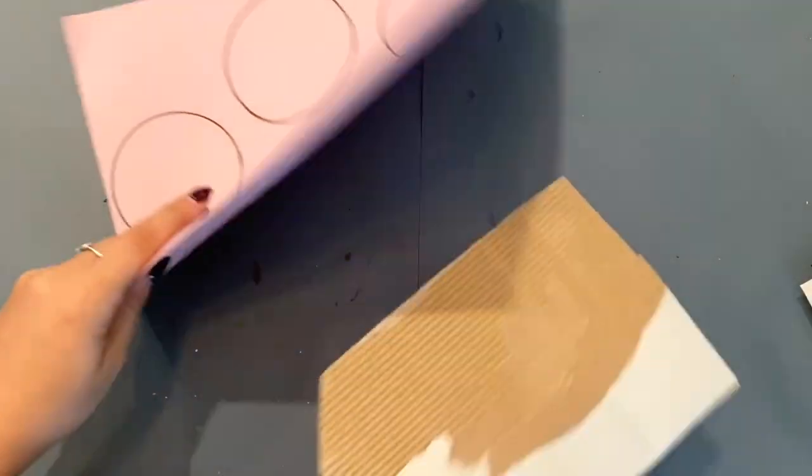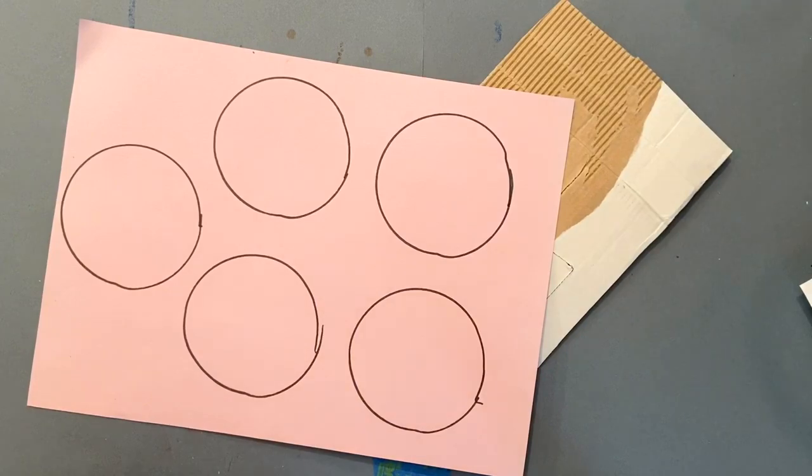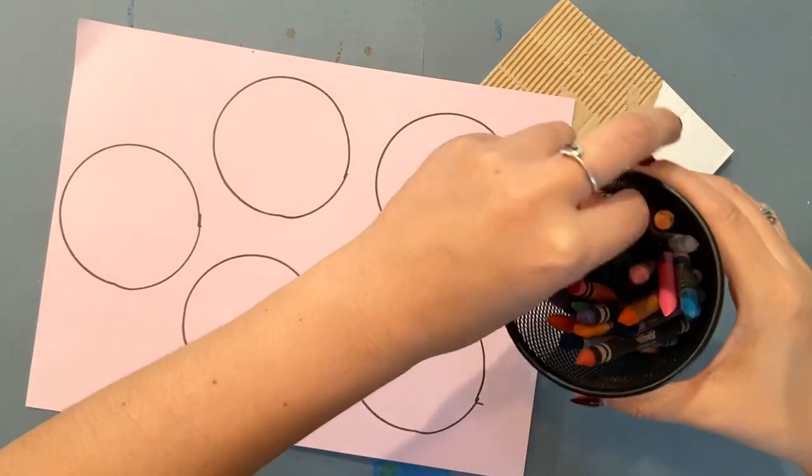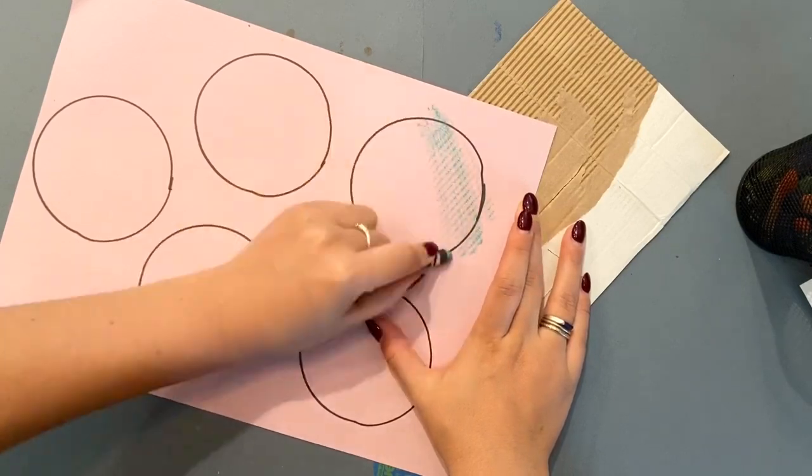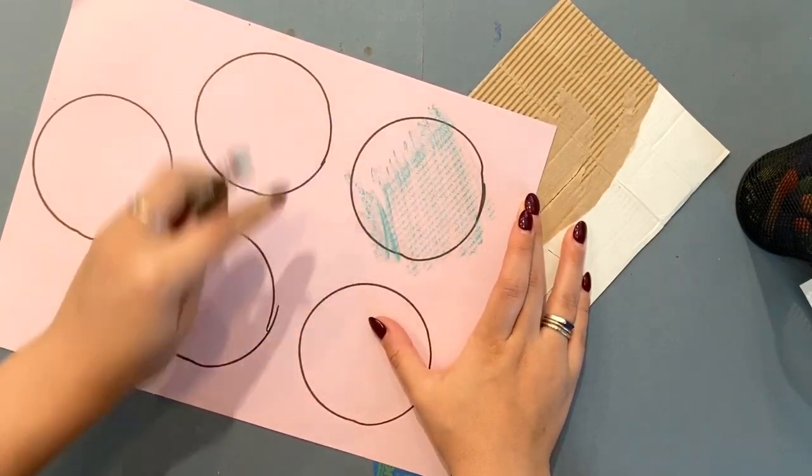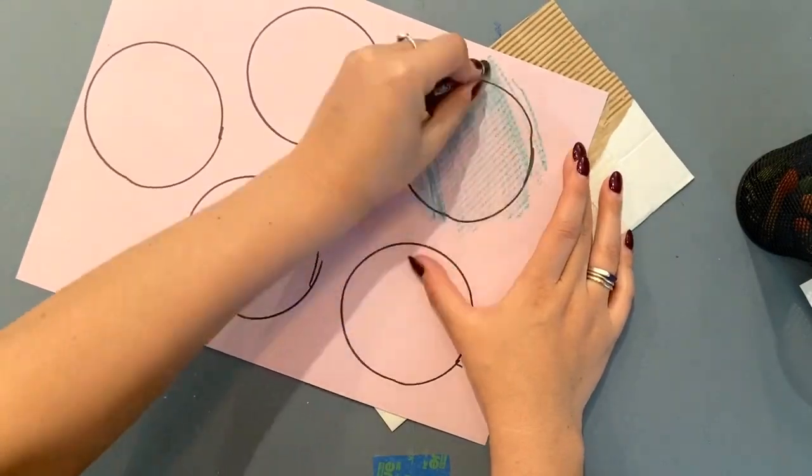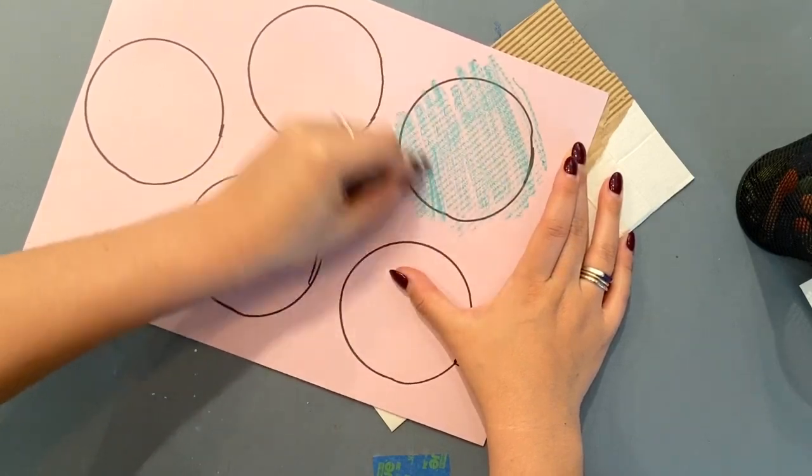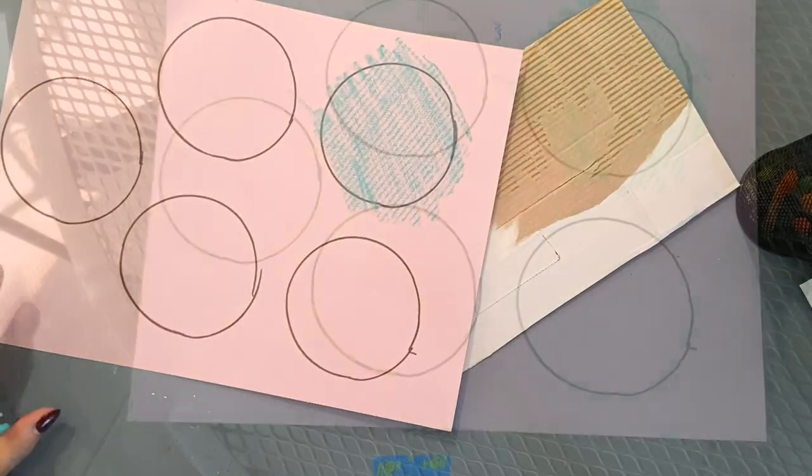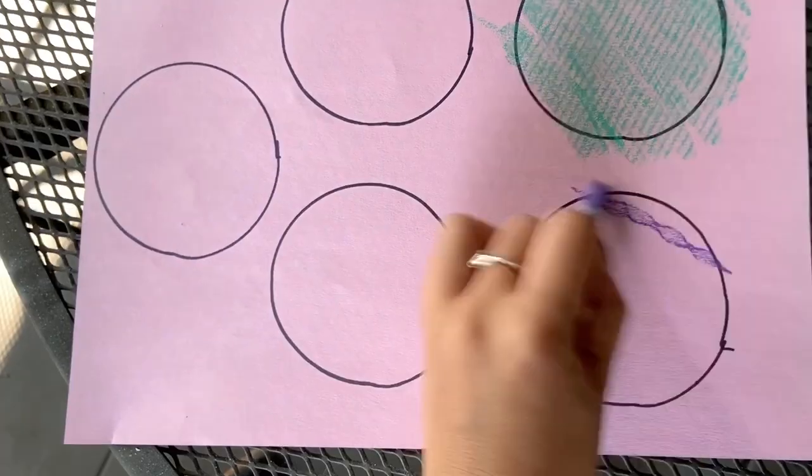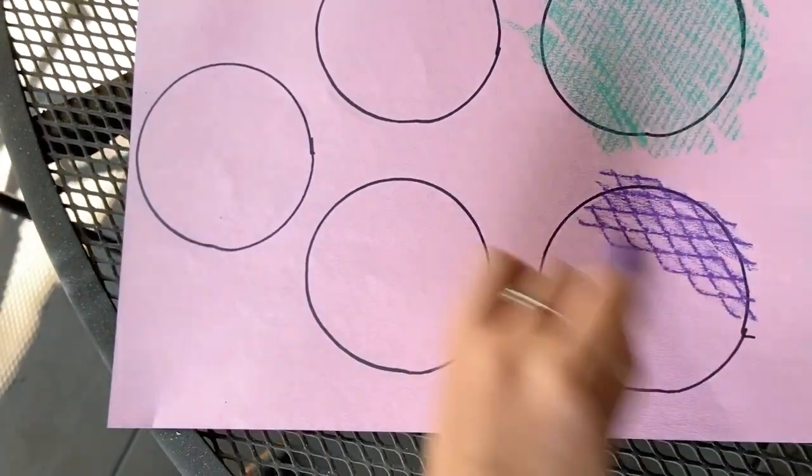The next step is to fill each of those circles with textures. A texture is what something feels like. In this case, I'm using crayons and I'll go around my house to find different interesting textures. When you have it, place it over. So here I have a table - place your paper over and then rub.